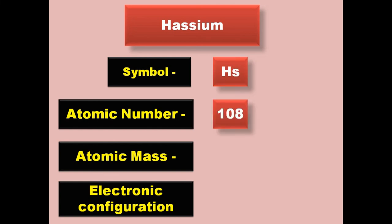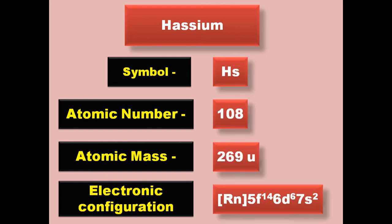Hassium has symbol Hs, atomic number 108, atomic mass 269, electronic configuration [Rn] 5f14 6d6 7s2. Hassium is a transition metal and exists in solid form at room temperature.